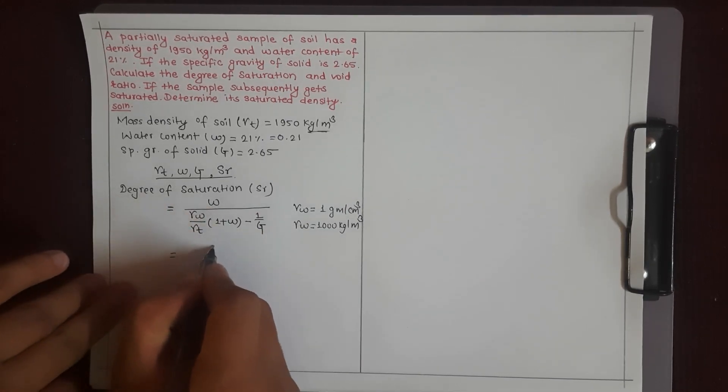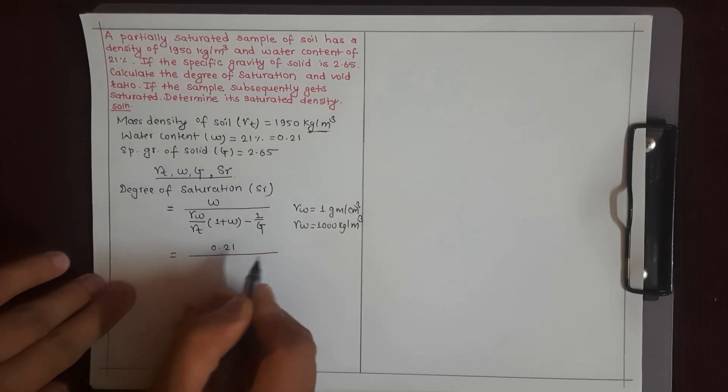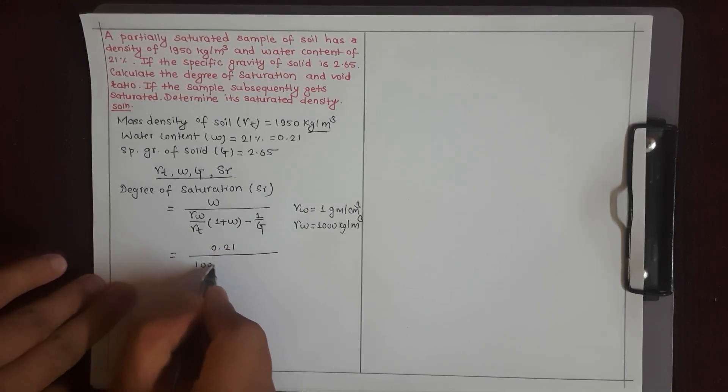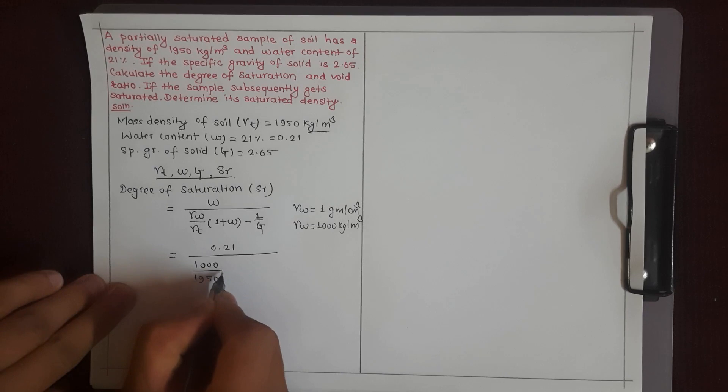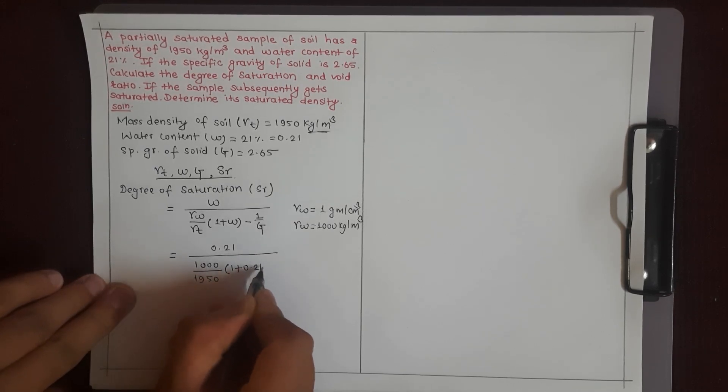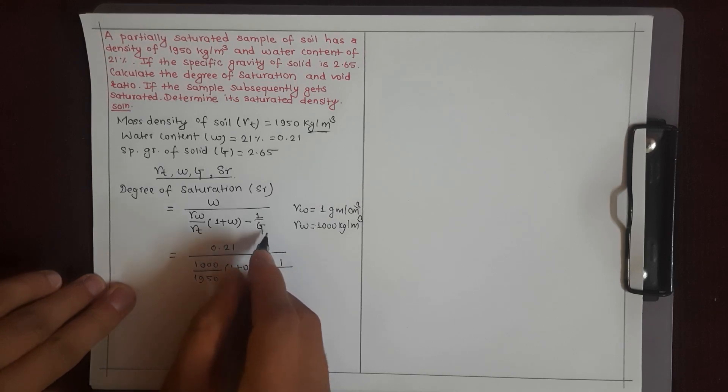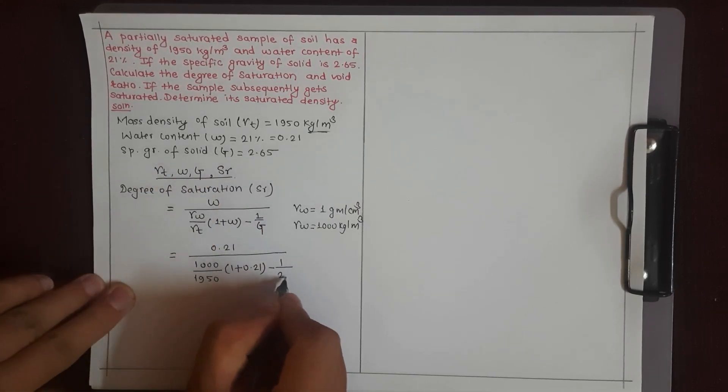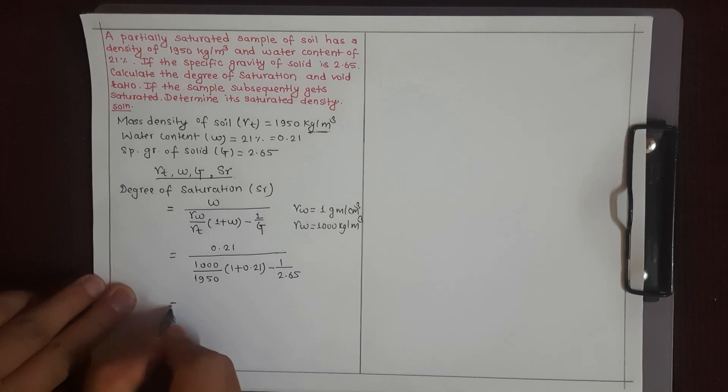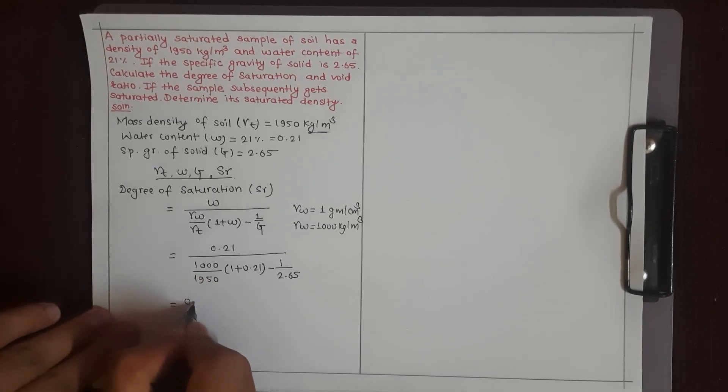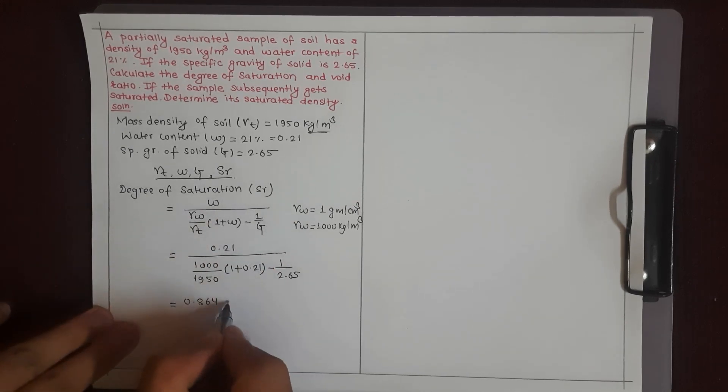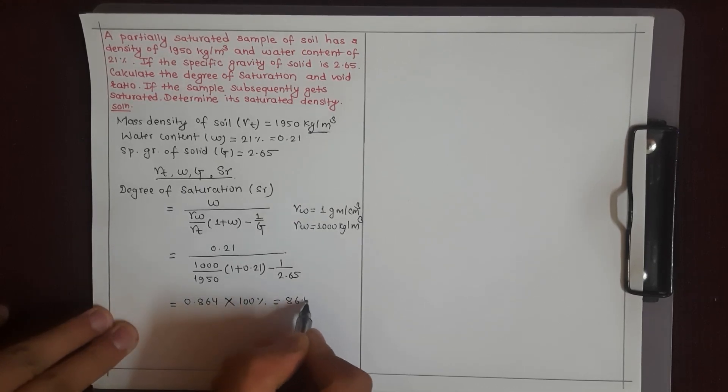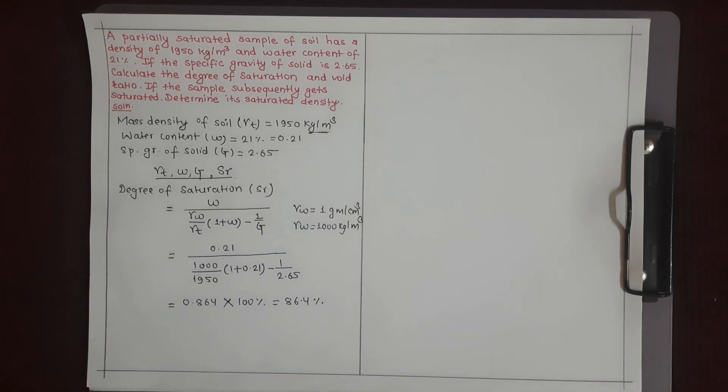Substituting the values: w is 0.21 divided by gamma w is 1000, by gamma T is 1950, and 1 plus w is 0.21 minus 1 by G, specific gravity is 2.65. This equals 0.86.